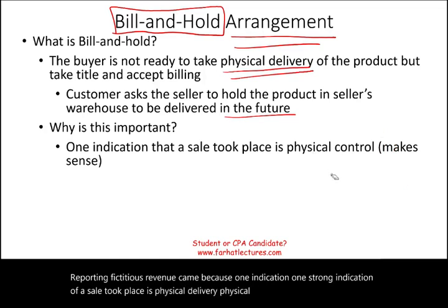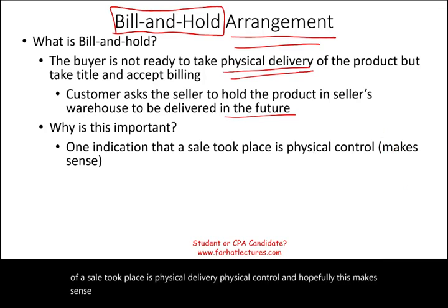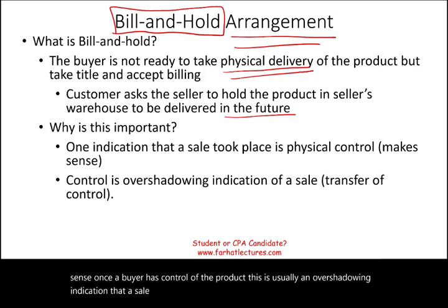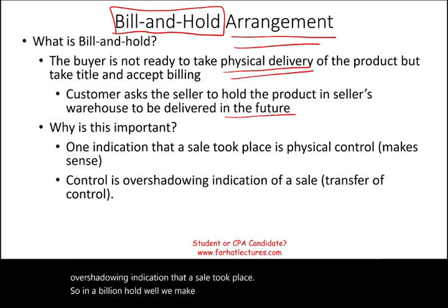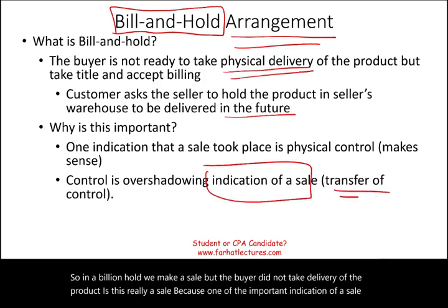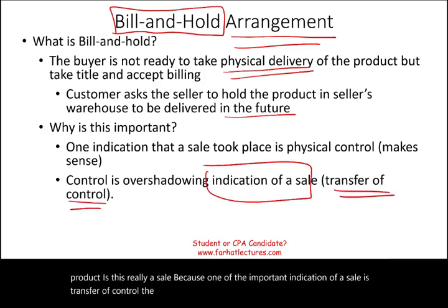Once a buyer has control of the product, this is usually an overshadowing indication that a sale took place. So in a bill and hold arrangement, we make a sale, but the buyer did not take delivery of the product. Is this really a sale? Because one of the important indications of a sale is transfer of control — the buyer took the product, it's now in their warehouse, and it's under their control.